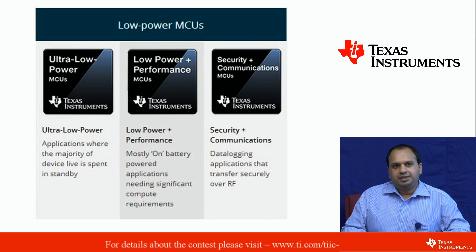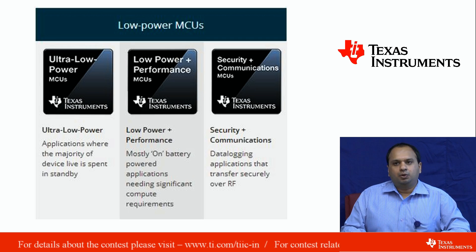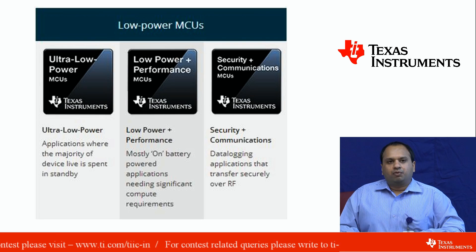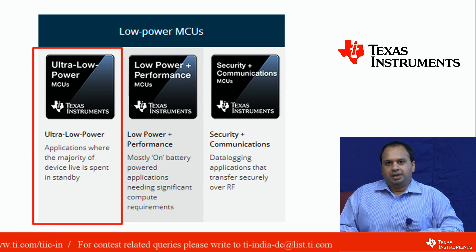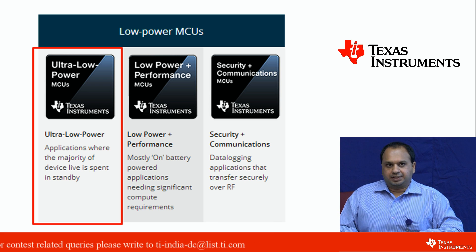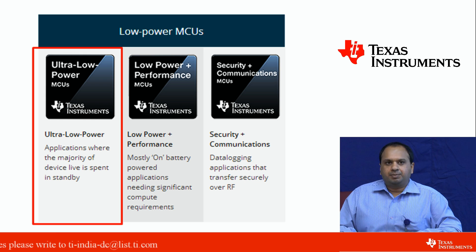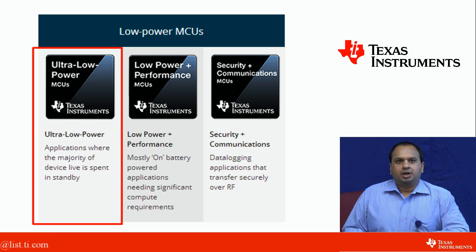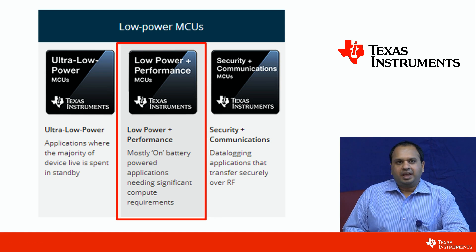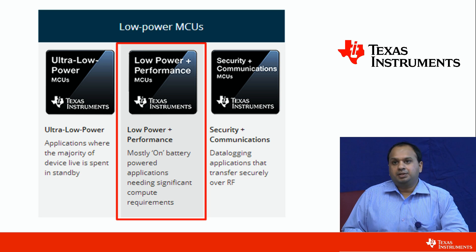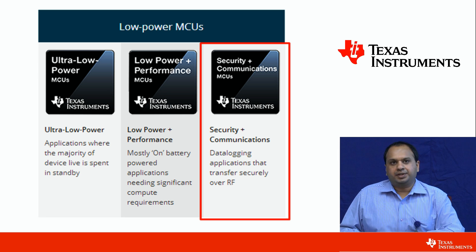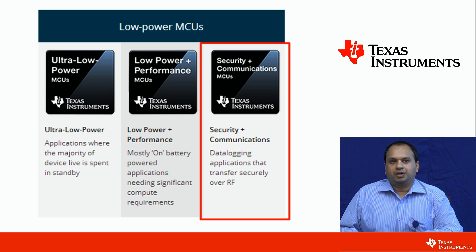In the low power MCUs, we have three different subcategories: the ultra low power MCUs, the low power plus performance MCUs, and the security plus communication MCUs. For applications where the MCU spends most of its time in standby mode, the ultra low power family is the best. These applications can be energy harvesting, portable consumer applications, medical instrumentation and sensors. For applications where you need ultra low power consumption as well as high computational power — applications like sensor hub, electrical meters or a blood glucose meter — the low power plus performance MCUs are the best. For applications which need security as well as communication along with ultra low power, such as vehicle access, building access or medical patches, you can use the third category in the ultra low power MCUs.